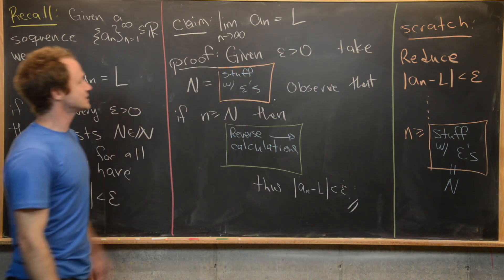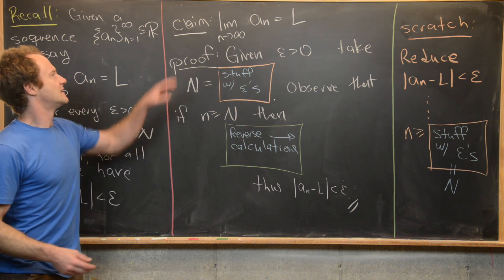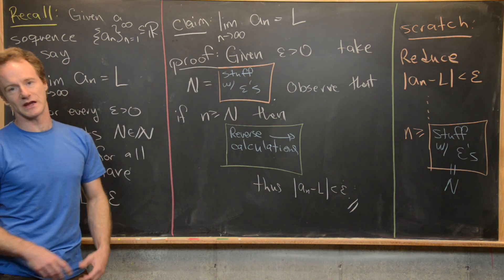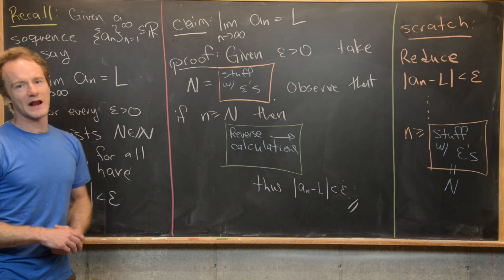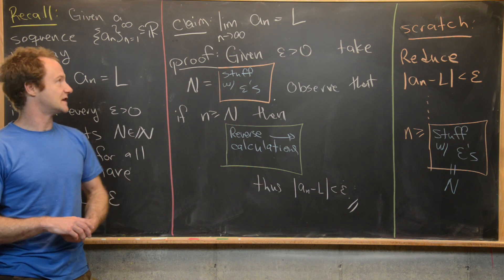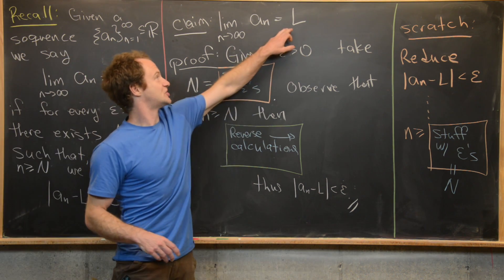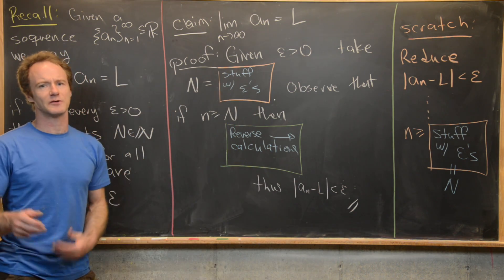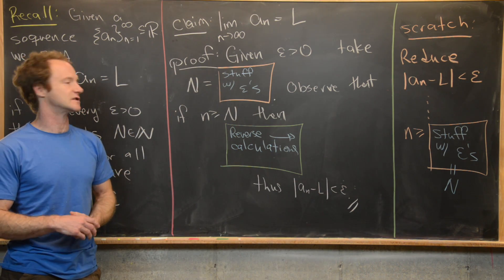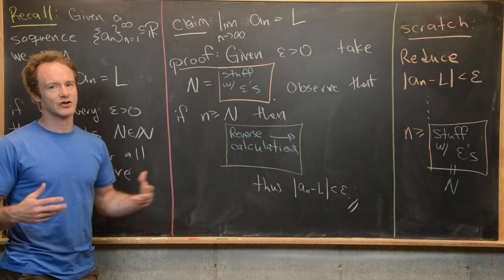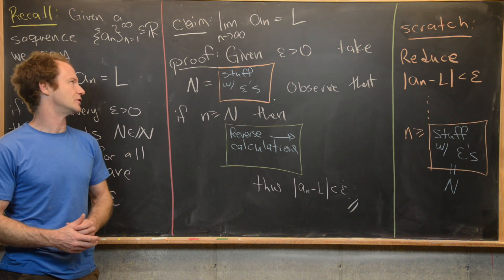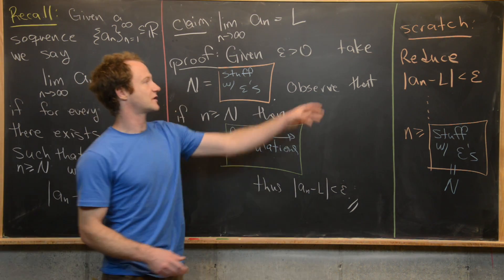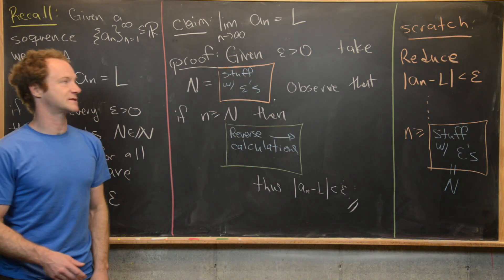Here's an outline for a proof that proves the claim: the limit as n goes to infinity of a_n equals L. First, you generally guess what the limit should be using standard methods from calculus. You should have a good feel for what the limit is before you launch into the proof. Next, before you even start the proof, you want to do some scratch work.